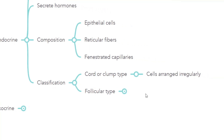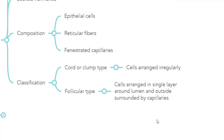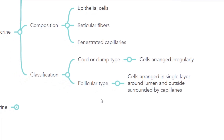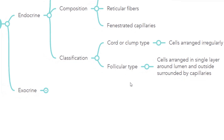In the cord or clump type, the cells are arranged irregularly in the form of cords or clumps. In the follicular type, the cells are arranged in a single layer around a lumen. This single layer of cells around the lumen together is called the follicle. Outside the follicle, surrounding the basement membrane, is a rich network of capillaries. The whole follicle is surrounded by capillaries where the secretions are poured — into the lumen and from the lumen into the capillaries.